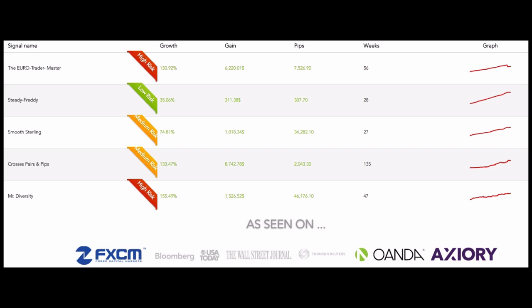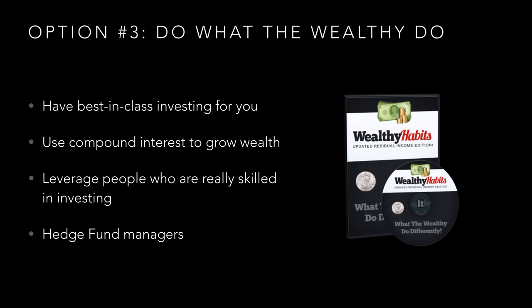So option number three is leveraging people who are really skilled in investing, and it doesn't have to be as expensive as you think. Here are some examples of traders you can have investing for you on Forex: the Euro Trader, 130% growth in 56 weeks; Steady Freddy, 35%; Smooth Sterling, 74%; Crosses Pairs and Pips, 133%; and Mr. Diversity, 155%. You can see that these are all in the positive, and this is trading on Forex using best-in-class investors trading for you.